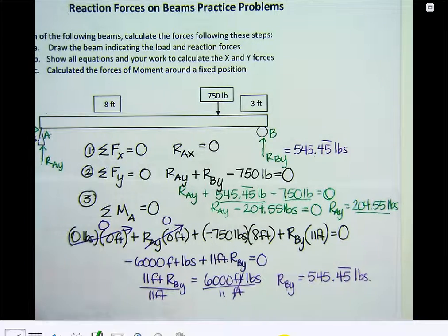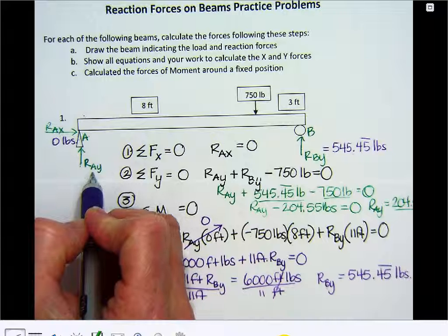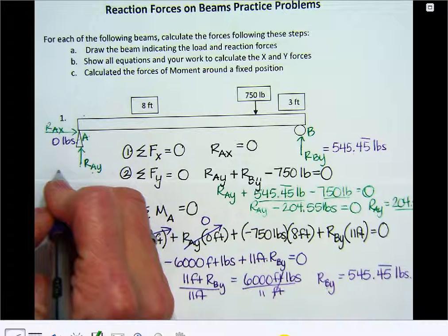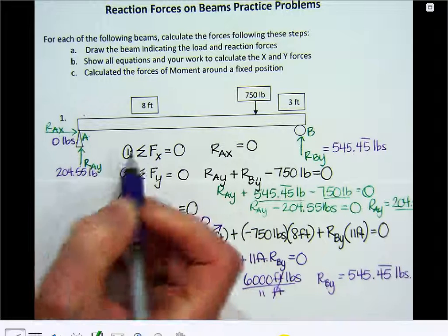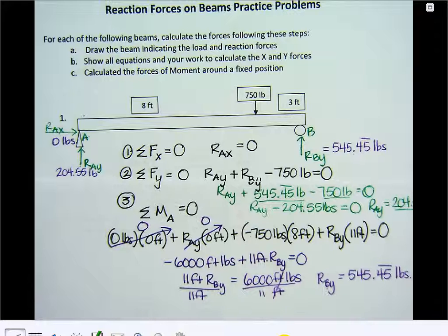So I'm going to add that to my drawing. That means this force right here acting back means the beam is pushing down with 204.55 pounds of pressure, of force. And so the reaction back is 204.55 pounds.